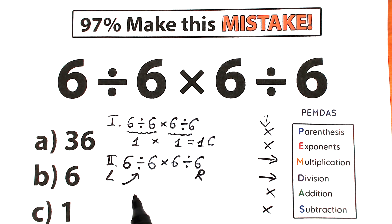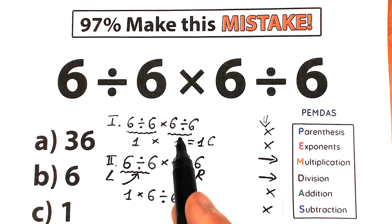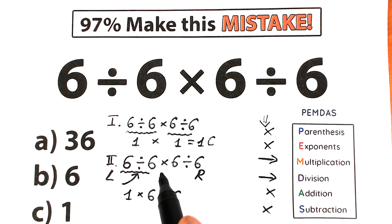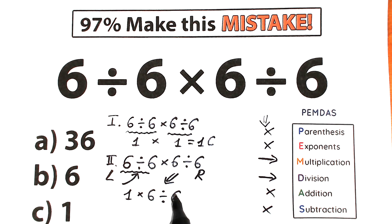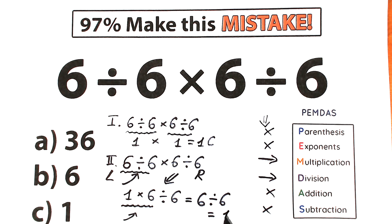So 6 divided by 6 gives us 1 — that's our first step. We now have 1, times 6, divided by 6. We rewrite the expression without dividing or multiplying yet. Scanning again, the first sign from left to right is multiplication, so we multiply 1 times 6, which gives us 6. Then we have 6 divided by 6, which gives us 1 — option C.